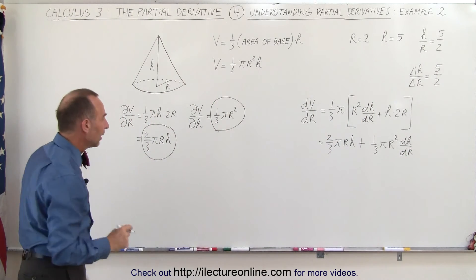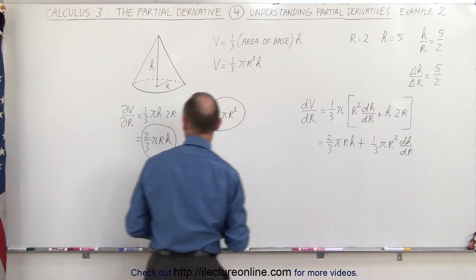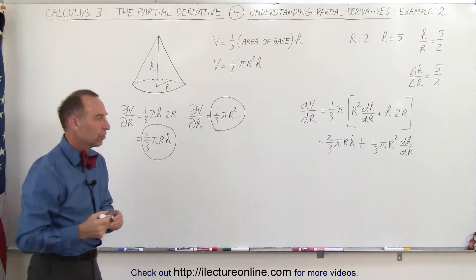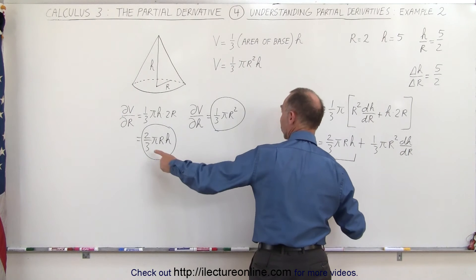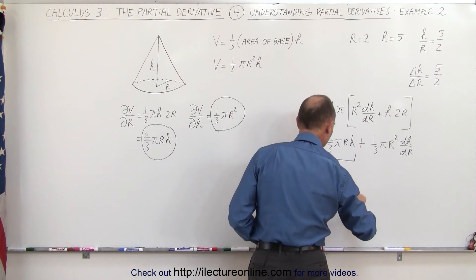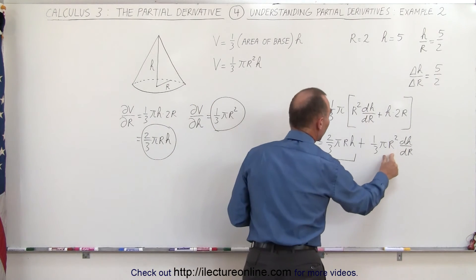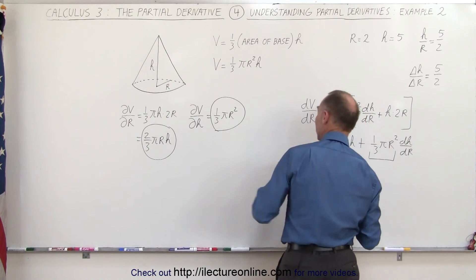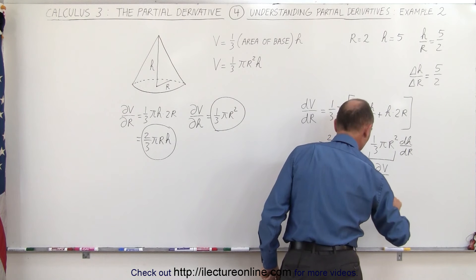Let's take a look at that result. Notice the first term, two-thirds pi r h, is equal to the partial derivative of the volume with respect to r — that is, keeping h constant. Looking at the second term, we get one-third pi r squared, which is equal to the partial derivative of the volume with respect to h, where r is kept constant.